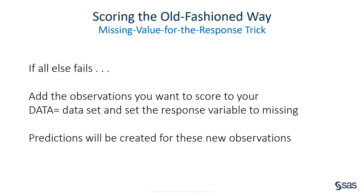Not all of these techniques are available in every SAS modeling procedure. You can always resort to the missing value for the response trick to generate predicted values with any modeling procedure. This technique requires that you add the observations to be scored to the data set you want to use to fit your model. Set the response values for these observations to missing. Observations with missing responses will not be used to fit the model, but predicted values can be requested in the modeling procedure and will be produced for these special observations.